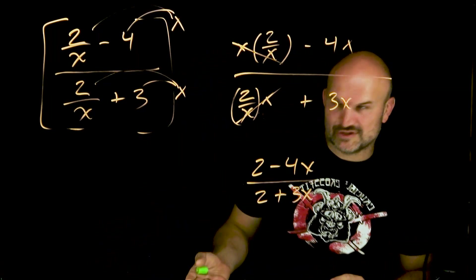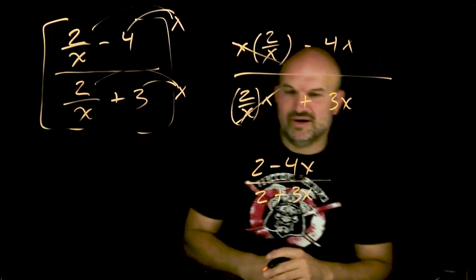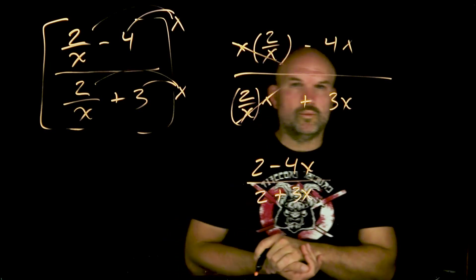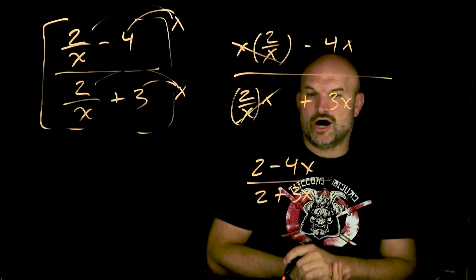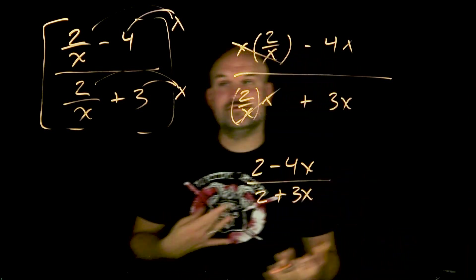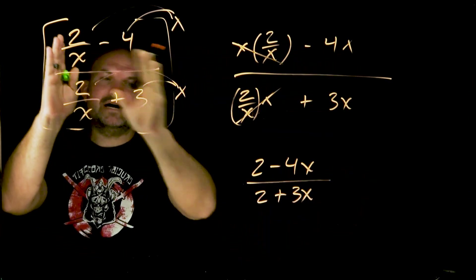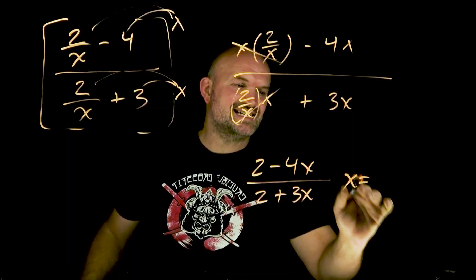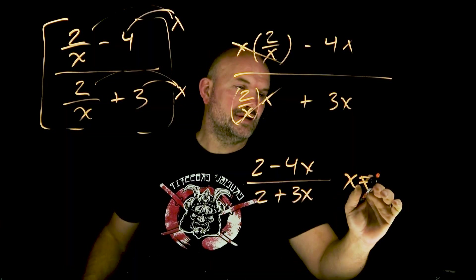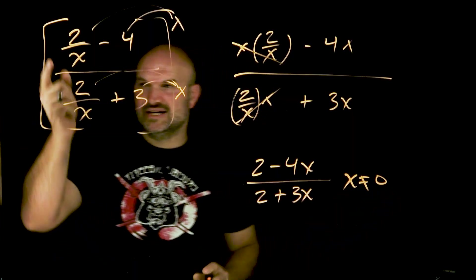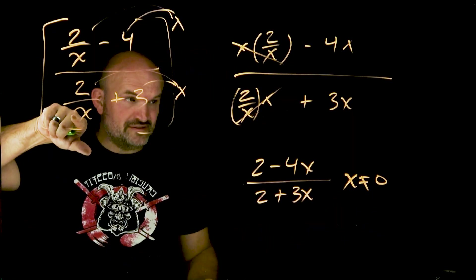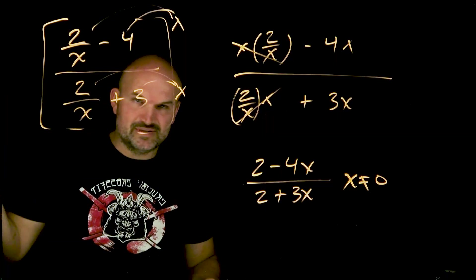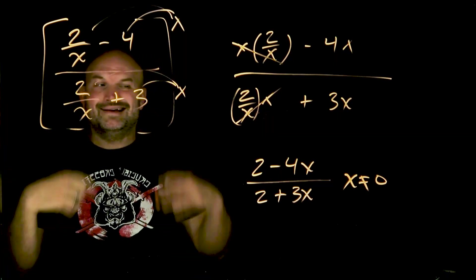Now you can obviously factor out the 2. But now the important thing is we need to understand what are going to be our excluded values. So if we go back to our original complex fraction, we know x cannot equal 0. Because in this case, if you have 0 in your denominator, then 2 divided by 0 is going to be undefined — that is not going to work.